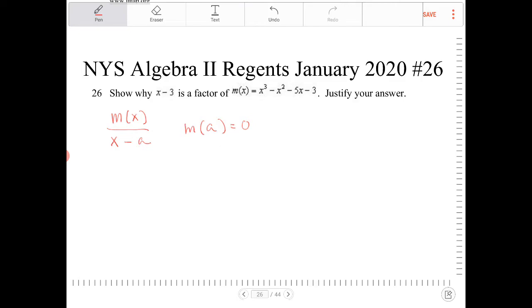Now if x minus a is not a factor, and we end up with m of a equaling to some value, let's call this value r. That number that the function evaluates to at a, this number happens to be the remainder. The remainder of what? The remainder of what would happen if we were to divide x minus a into m of x.